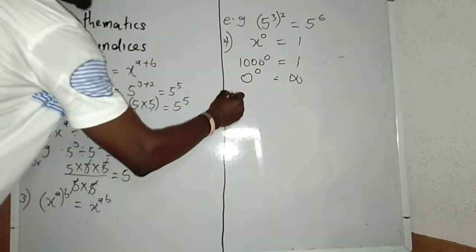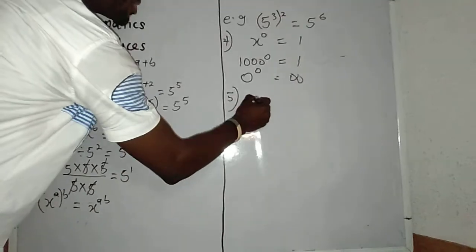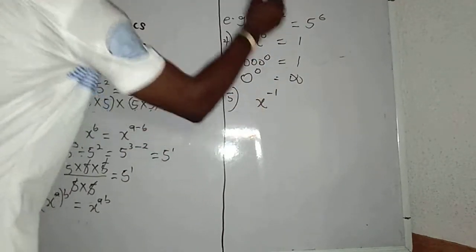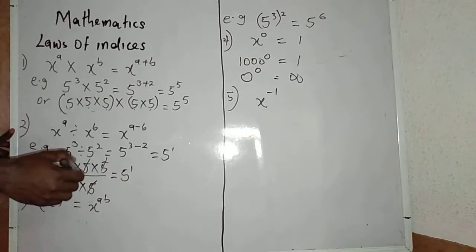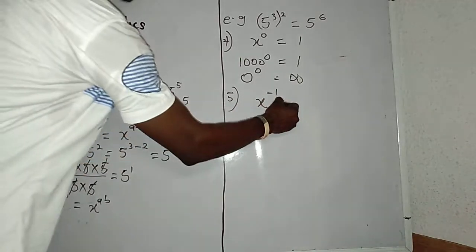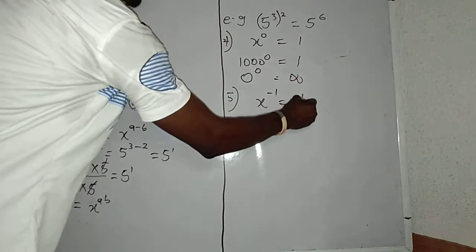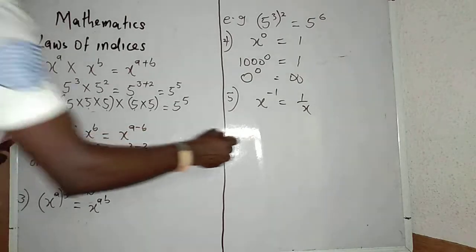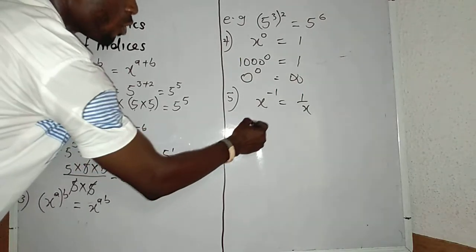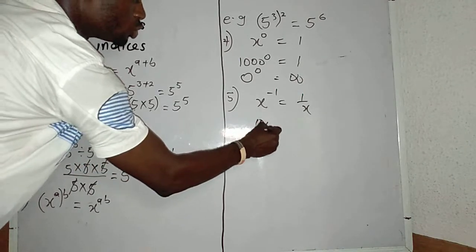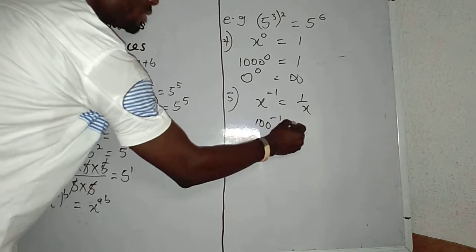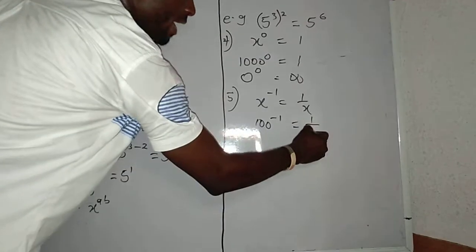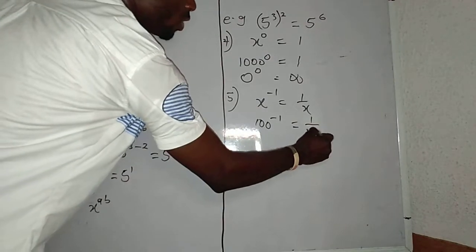Law 5: If I have x raised to power minus 1, it will be equal to 1 all over x. Also, if I have 100 raised to power minus 1, my answer is equal to 1 divided by 100.